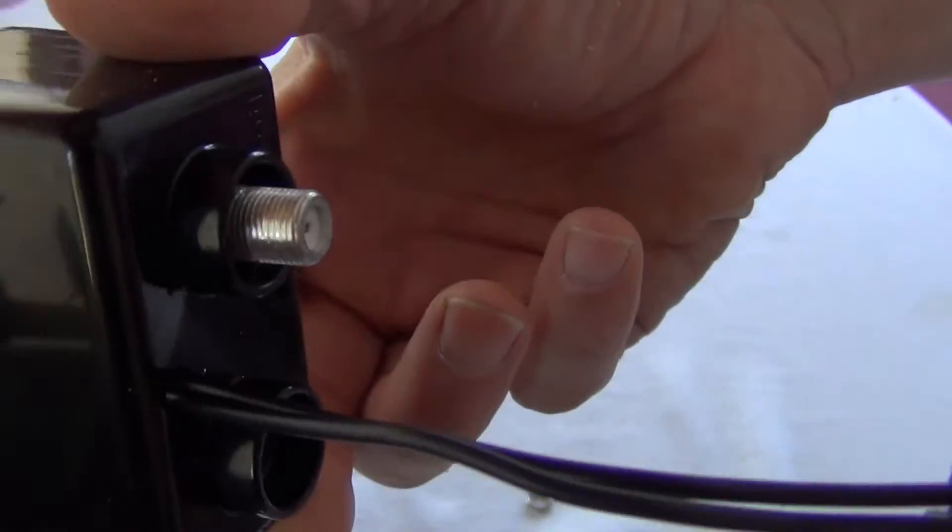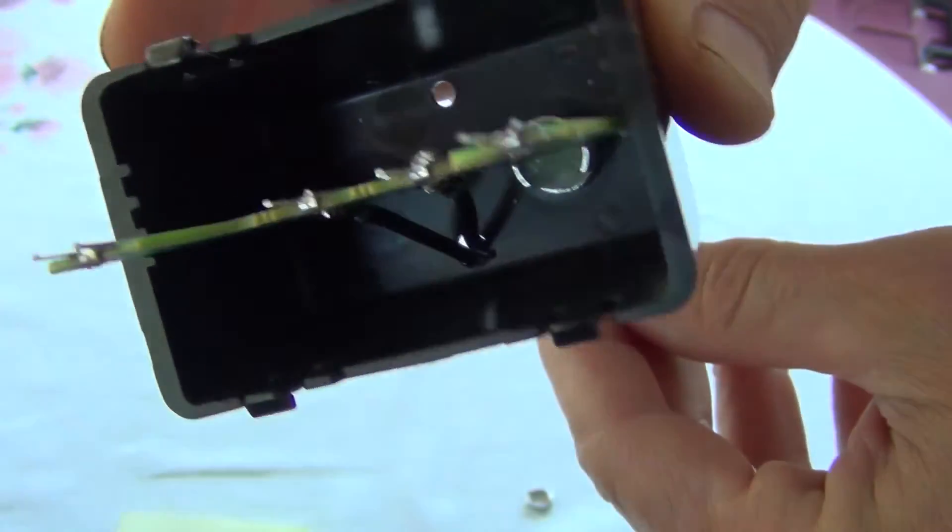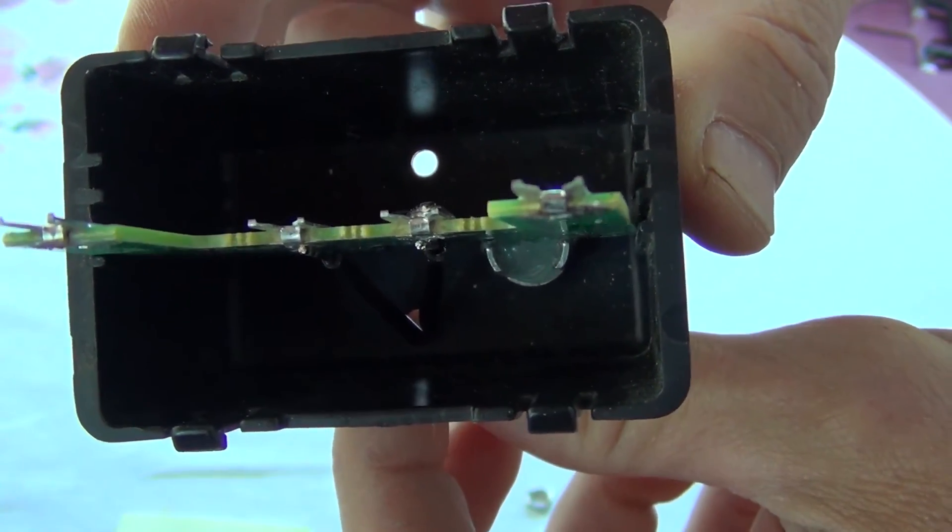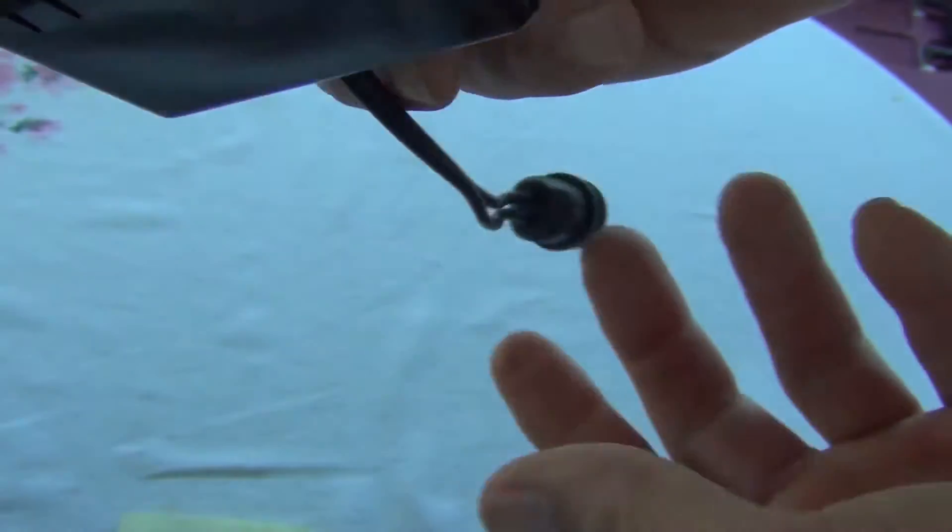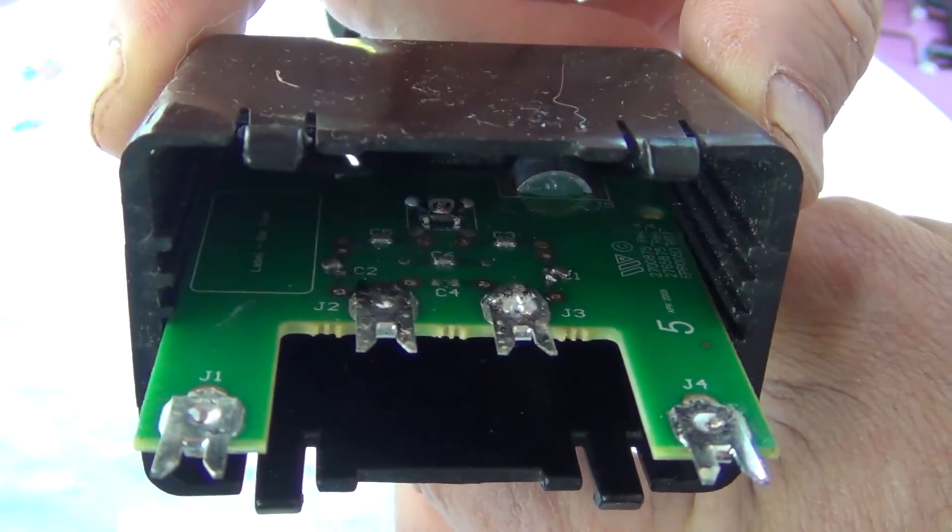And now you can see I pulled it through here. And it's kind of back lined up. Now what I'm going to do here is put some strain relief with tie wraps on this cable so that it won't break that solder connection when I install it.